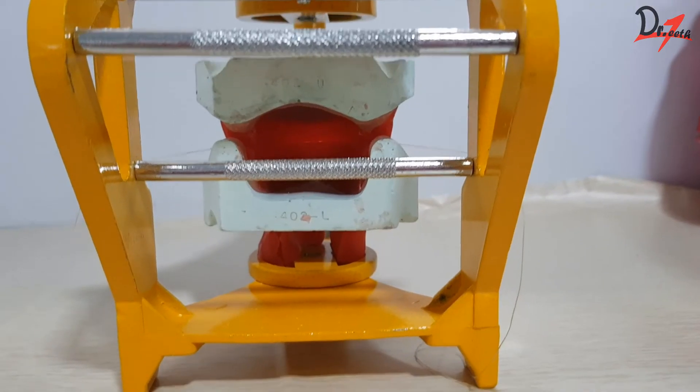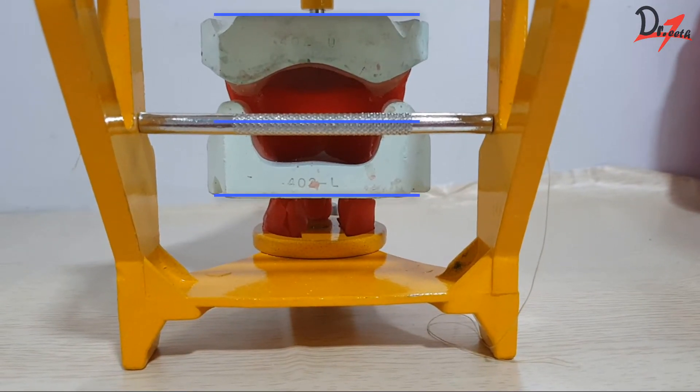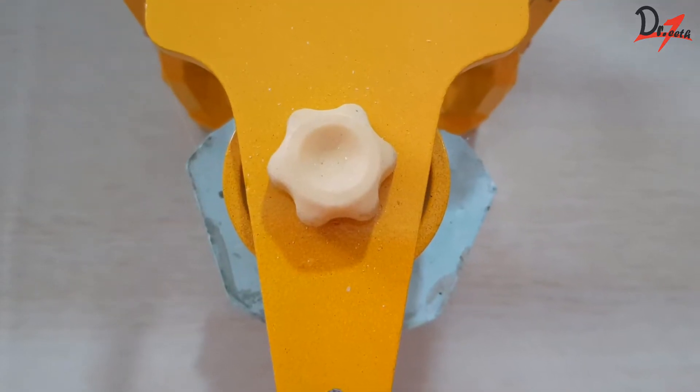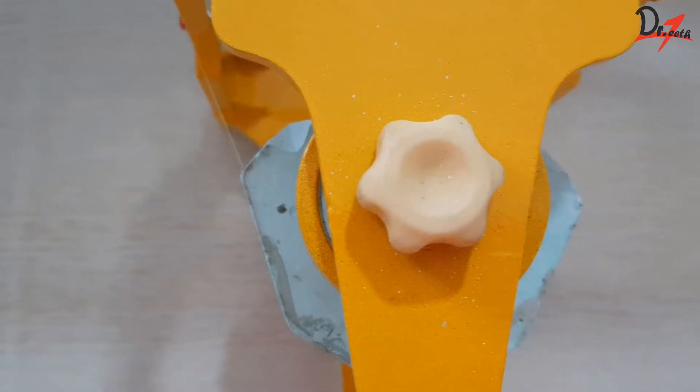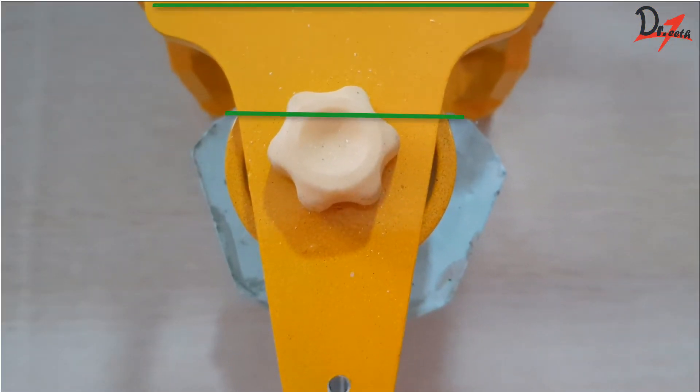From the posterior side, we have to make sure that the casts are parallel to the reference rod. As you can see here. From the superior view also, we have to check if the cast is parallel to the upper member.